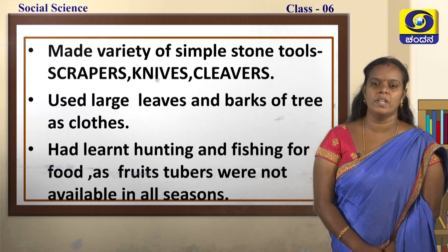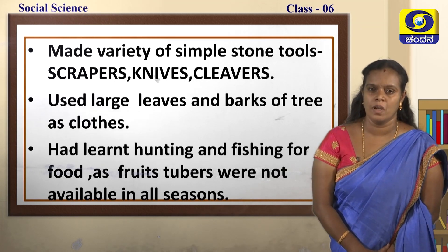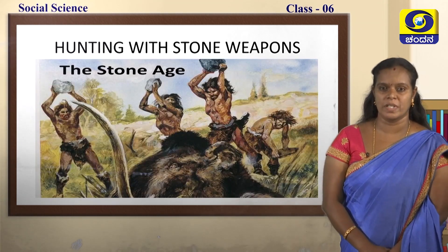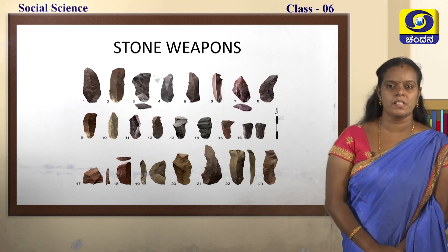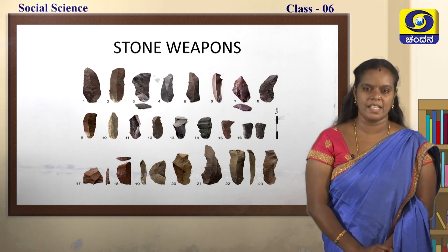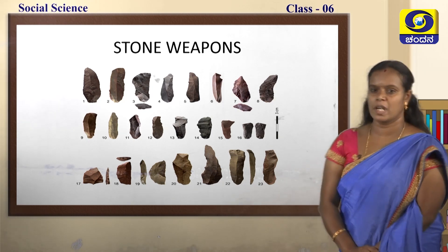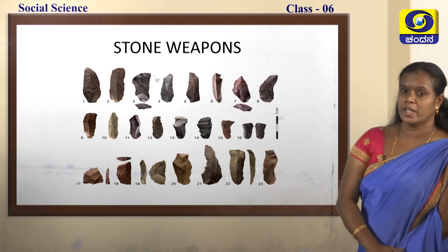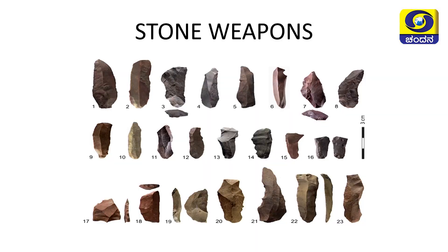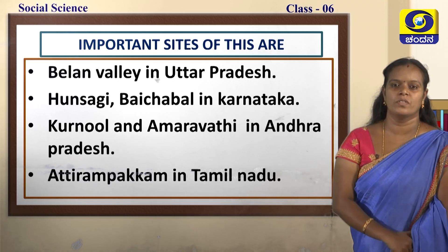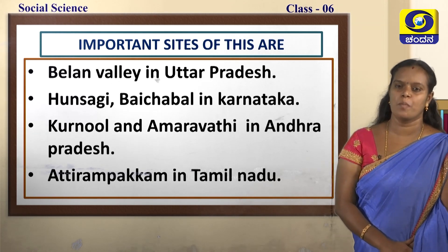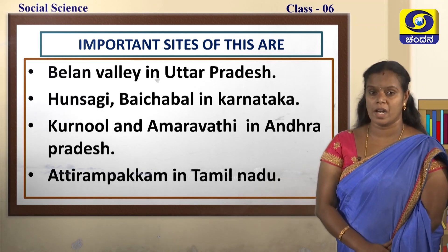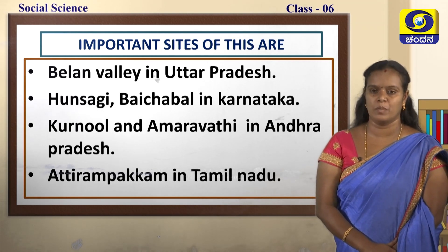They learned hunting and fishing for food, as fruits and tubers were not available in all seasons. Look at this picture — you can see how the man of the old stone age is hunting animals with the help of stones. And here you can see the variety of stone weapons used by the old stone age man. Important sites of the Paleolithic age are Belen Valley in Uttar Pradesh, Hunsagi and Baichapal in Karnataka, Karnul and Amaravati in Andhra Pradesh, and Atirampakkam in Tamil Nadu.